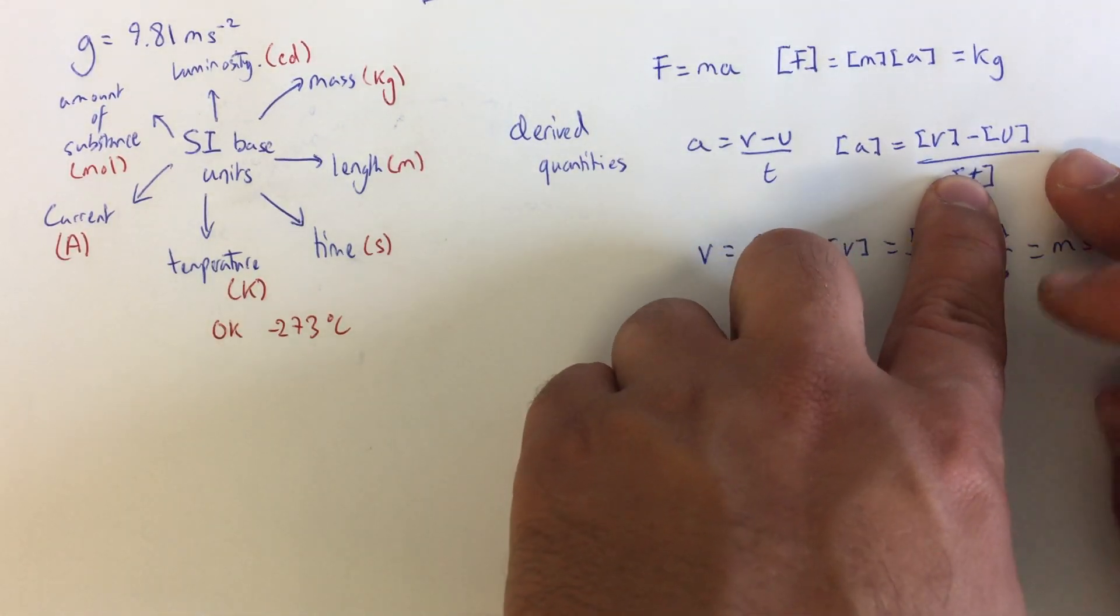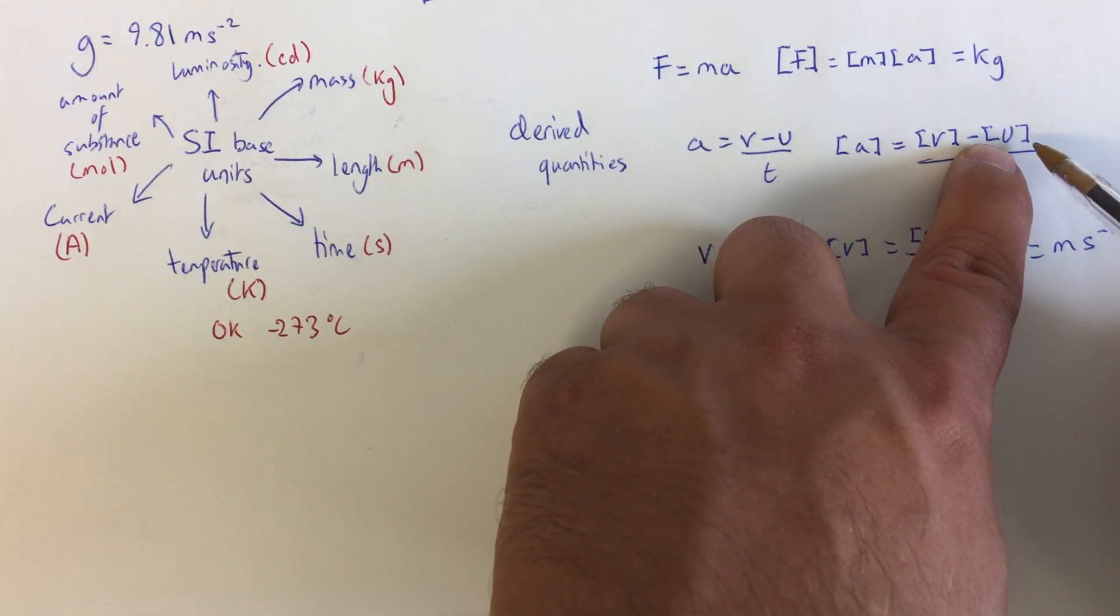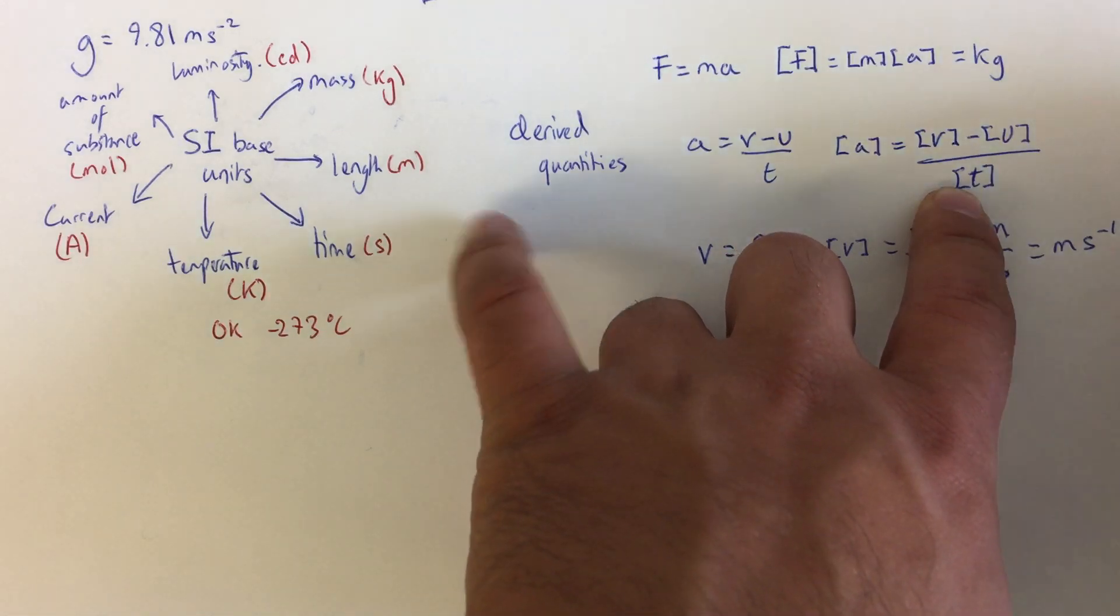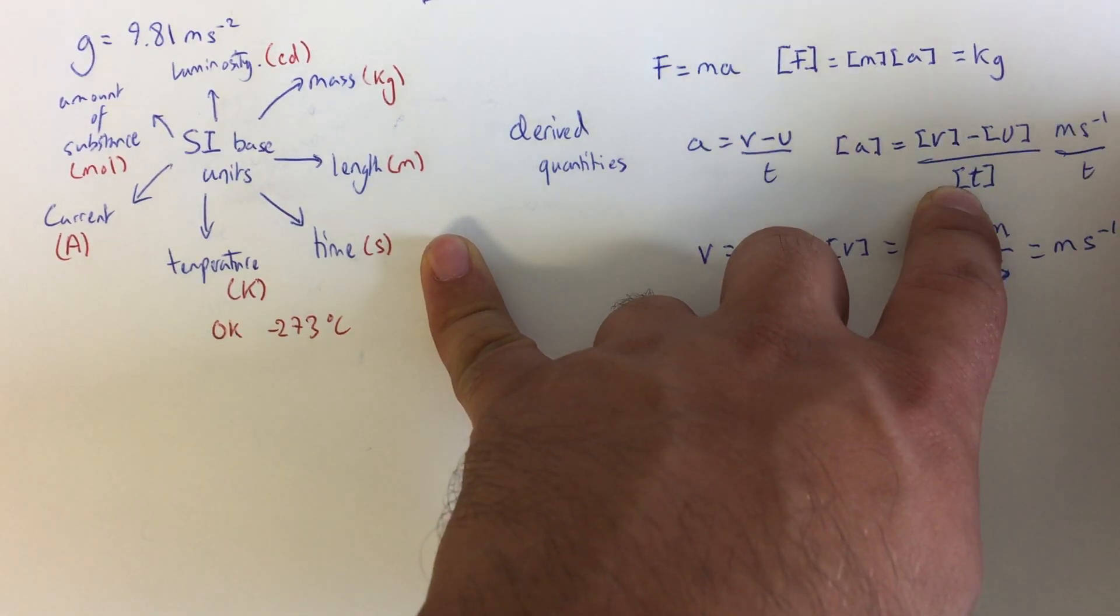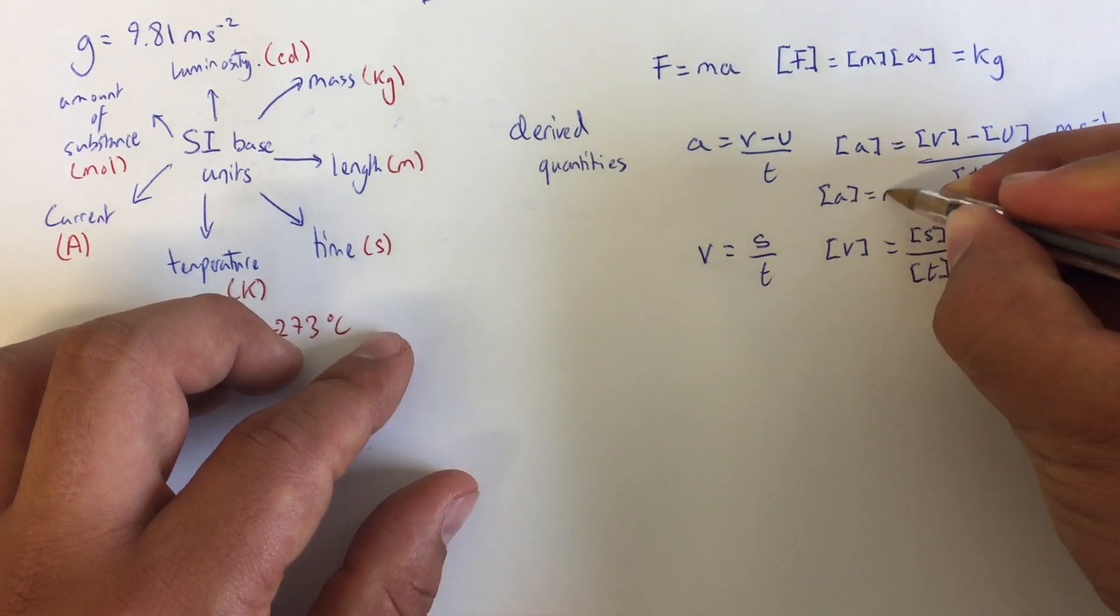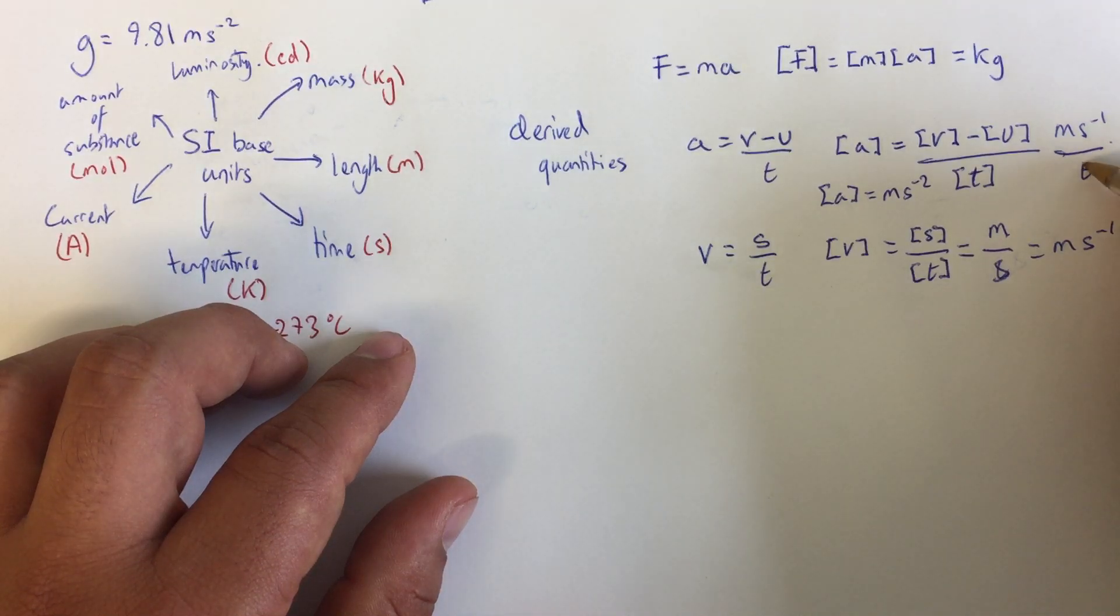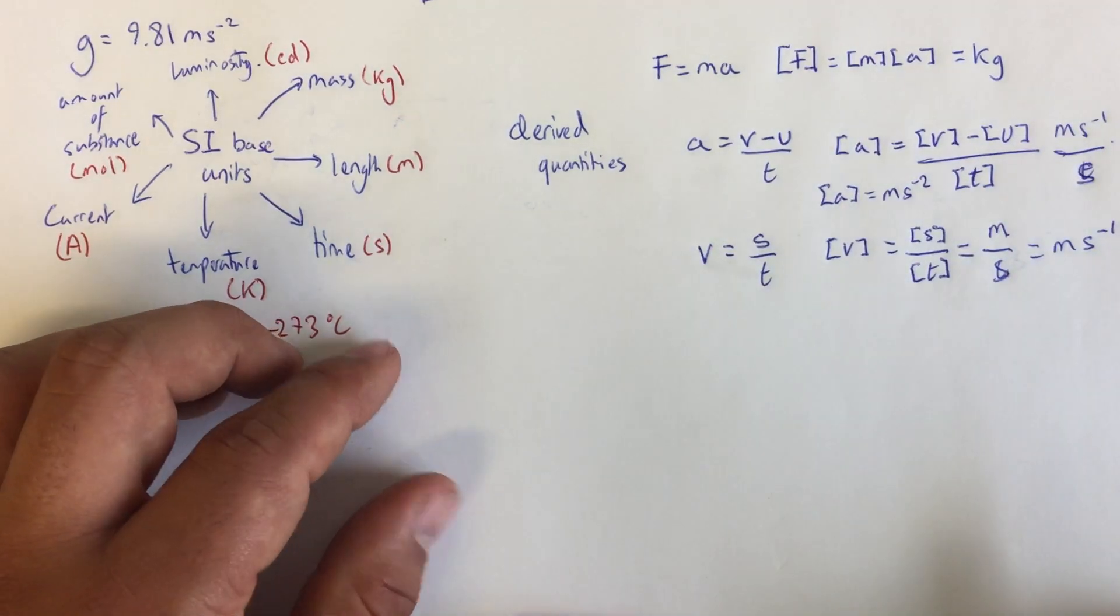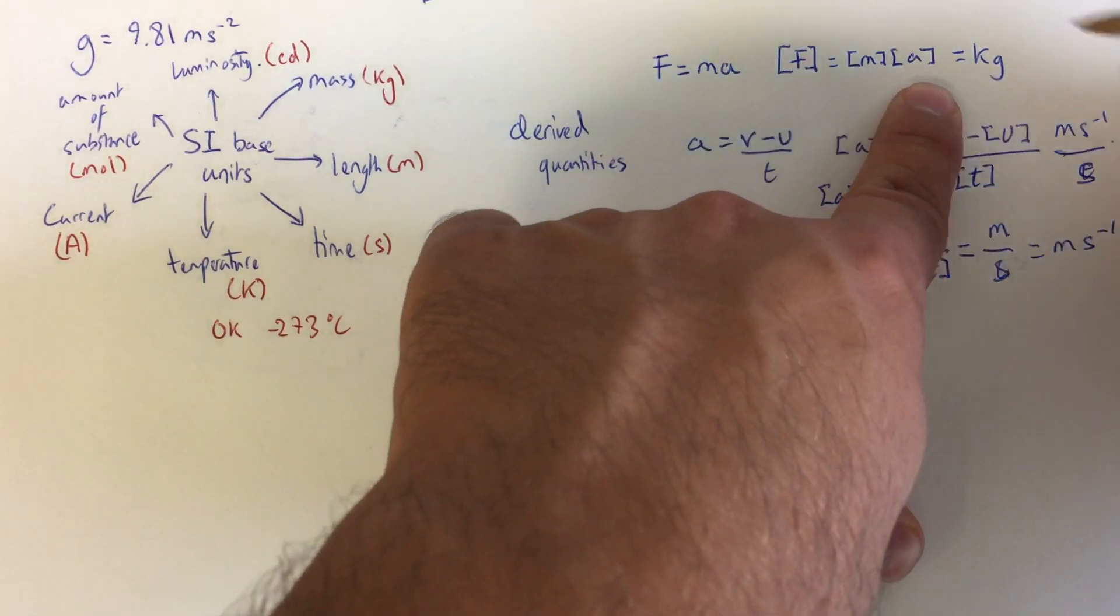We can now include that in this equation. We have velocity minus velocity. Velocity is meters per second, and initial velocity is meters per second. Time is in seconds. So you do velocity, meters per second, divided by time. That will give you the derived quantity for acceleration, which is meters per second to the minus two, because this is seconds to the minus one, but it's already seconds to the minus one, which gives us seconds to the minus two.